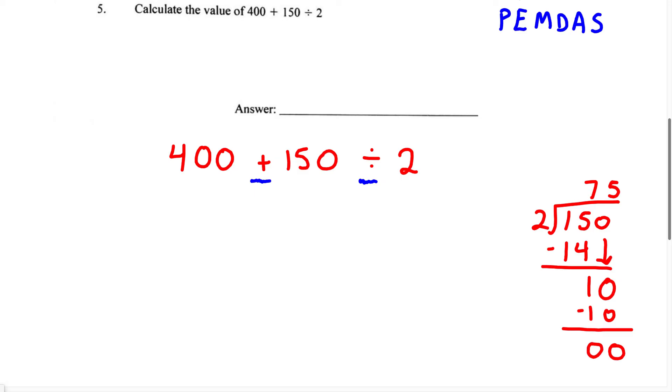Therefore, the division is now complete. So we can say 150 divided by 2 is going to give us 75. Therefore, we're just going to write 400 plus 75. And when we add this, 400 plus 75 is going to give us 475.